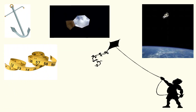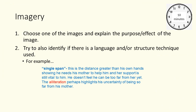So we've got an anchor, a tape, a kite, and someone up in space. What I'd like you to do next is choose one of the images and explain the purpose and effect of the image. Try to also identify if there is a language and/or structure technique used. For example, 'single span' — this is the distance greater than his own hand, showing he needs his mother to help him and her support is still vital to him. He doesn't feel he can be too far away from her yet. The alliteration perhaps highlights his uncertainty of being so far away from his mother. Pause the video for ten minutes to answer these questions.